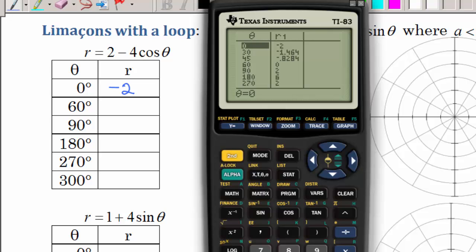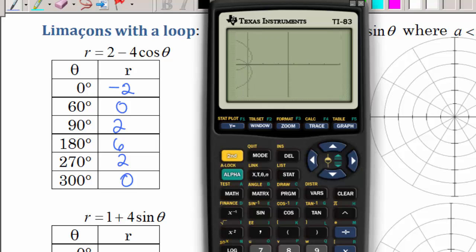And I'm going to do second graph and create my table. So I have 0. And those were the thetas from the last exercise. So you can keep them. They're about the same. So I want to get down here to 60, then 90, 180, 270, and then I'd need to punch in a 300.